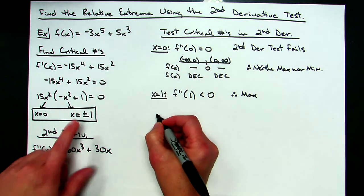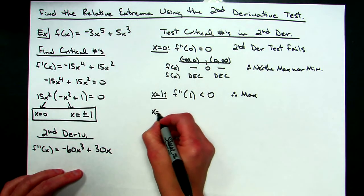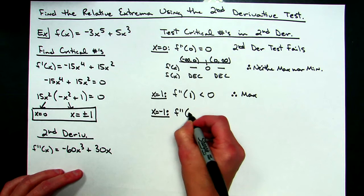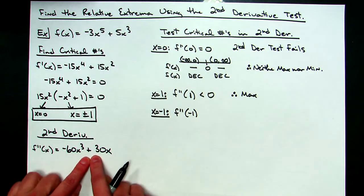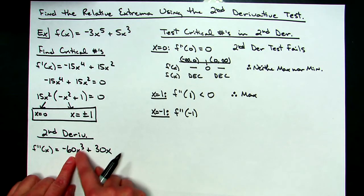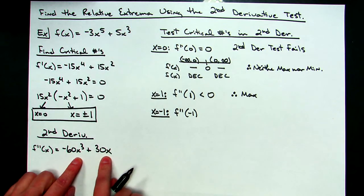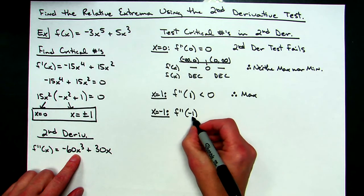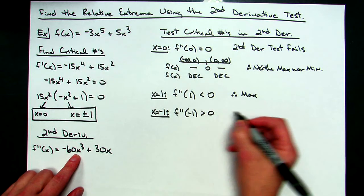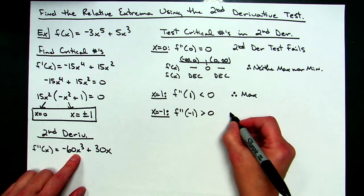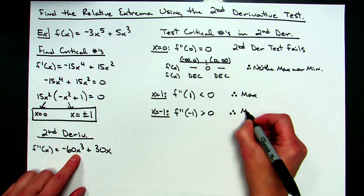Now plugging in x equals negative one into the second derivative. Plugging in a negative number here: negative cubed gives a negative, times negative 60 gives a positive, making that term positive. The 30x term is negative. The first term is clearly bigger, so f double prime of negative one is greater than zero. Thinking opposite again: greater than zero means I have a relative minimum at x equals negative one.